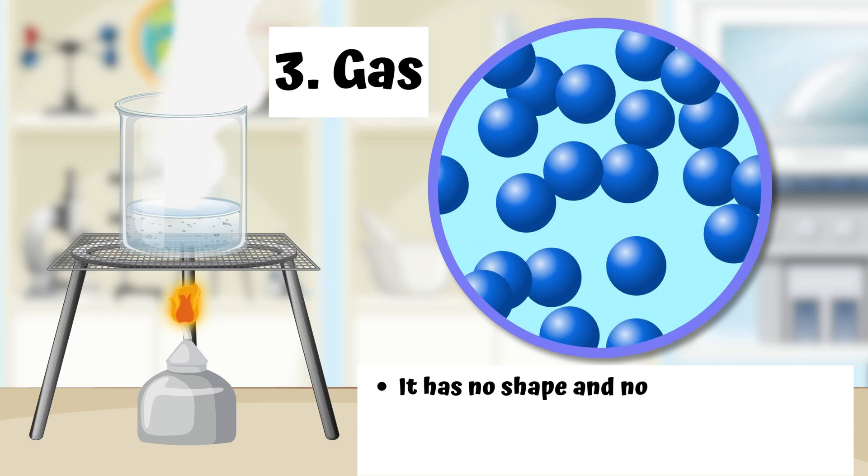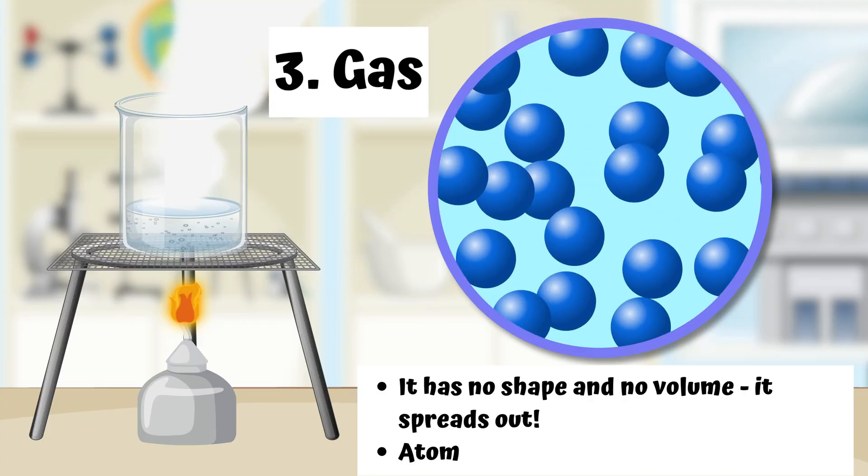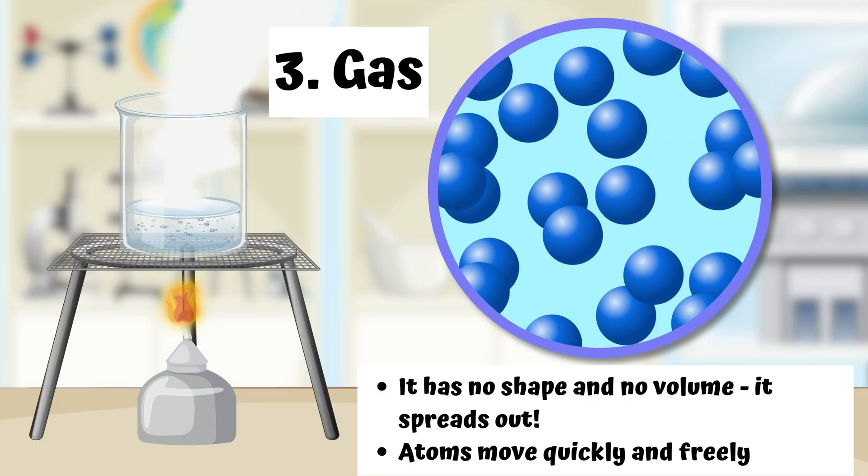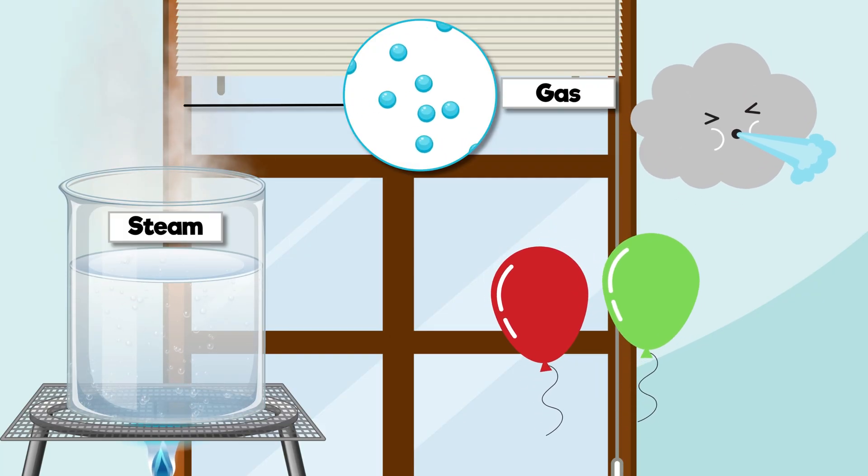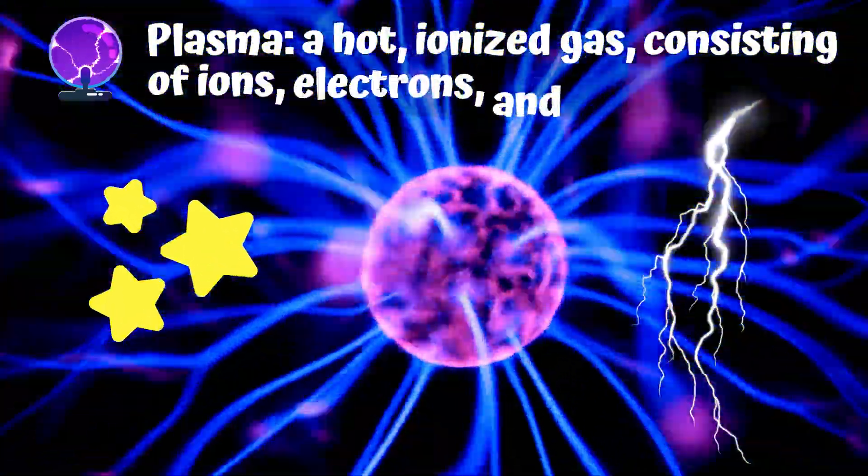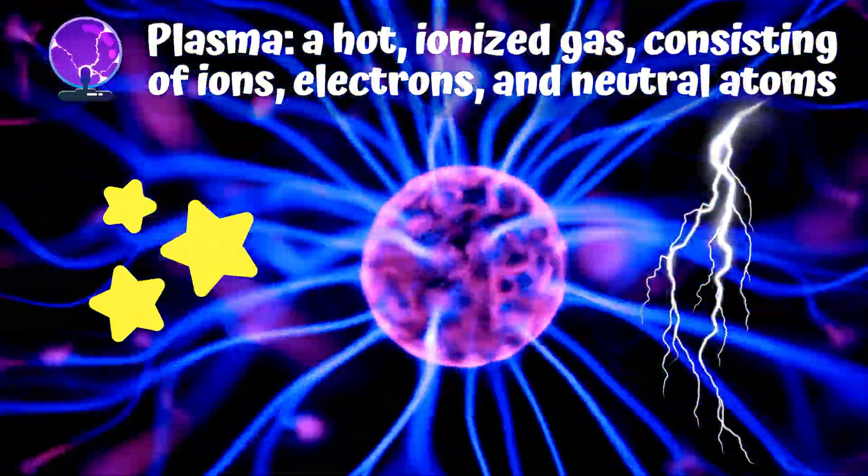Gas. It has no shape and no volume. It spreads out. Atoms move quickly and freely. Some examples are steam, air, and gas in helium balloons. Fun fact, there are even more states like plasma found in stars and lightning.